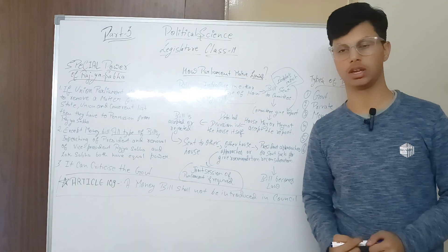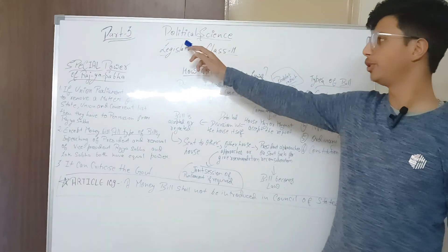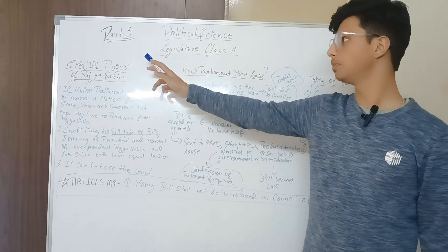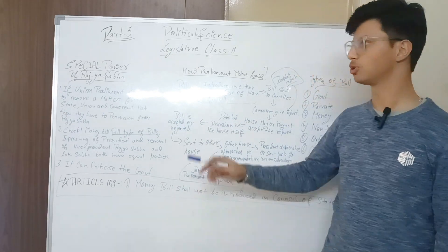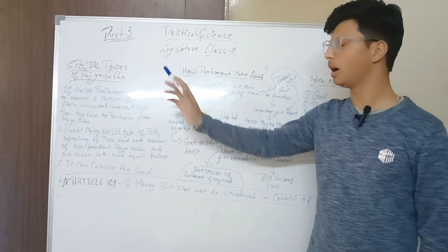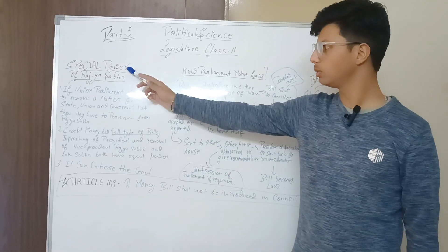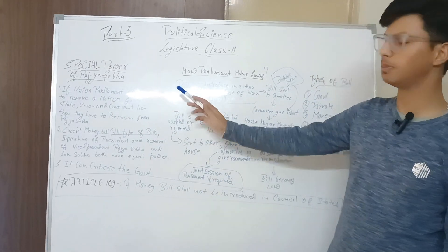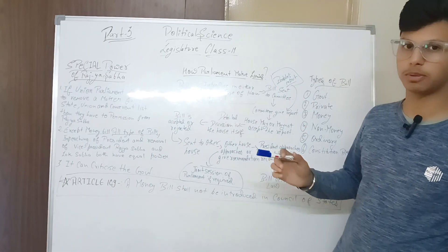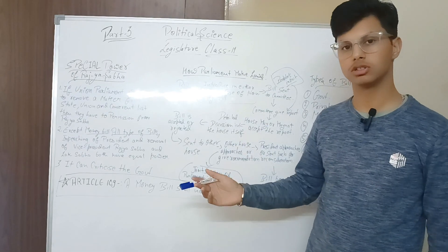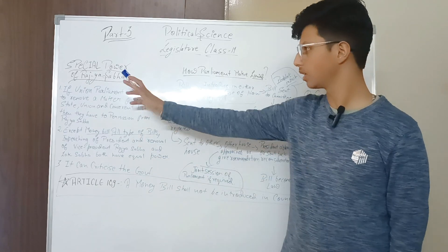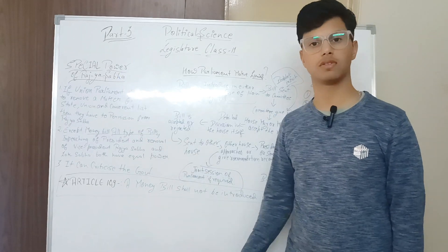Hello guys, welcome once again. We are going to start and continue our Political Science Class 11 Part 3 Legislature. Sorry the video is too late because of some conditions. Our new topic is special powers of Rajya Sabha. In the previous part 2 of this legislature chapter we discussed the functions of Lok Sabha and Rajya Sabha and the differentiation of Lok Sabha and Rajya Sabha.